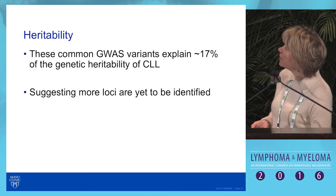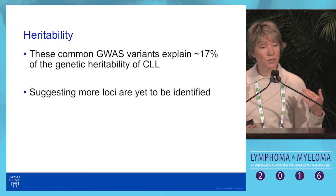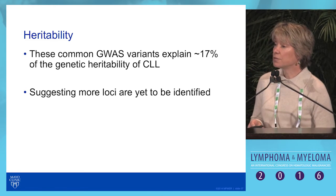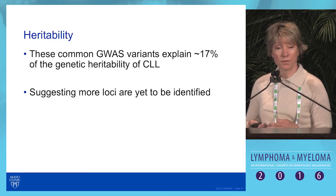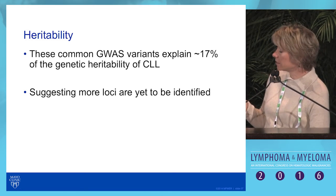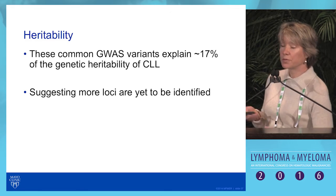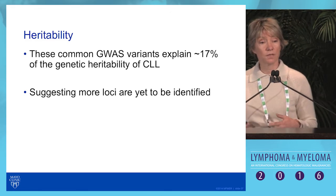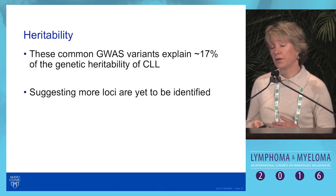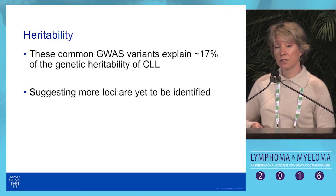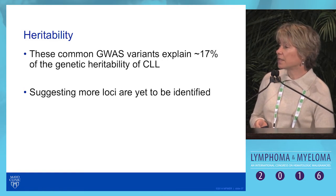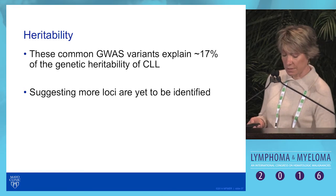Regarding heritability — that JAMA paper showed CLL heritability around 58%. The genetic variants we've identified explain only 17% of the overall heritability observed, suggesting more inherited variants can and will be identified to explain the remaining heritability of CLL.